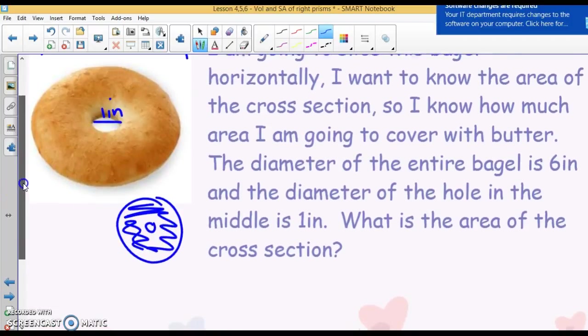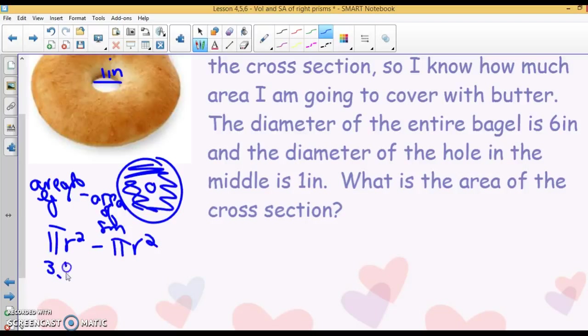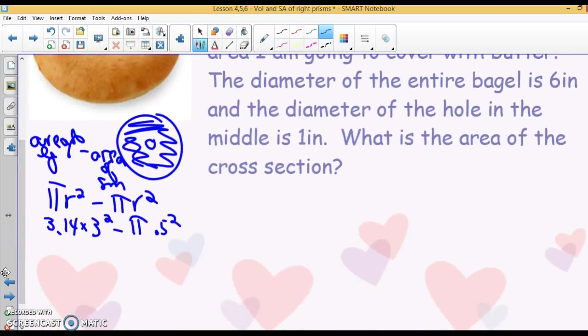To find the area where I'm buttering, I'm going to find the area of the big circle and subtract out the little hole in the middle. So area of the large circle minus area of the small circle. I'm going to use pi or 3.14. So pi r squared minus pi r squared. 3.14 times the radius of the whole bagel is 3, minus the radius of the little circle in the middle is going to be 0.5. When I do the math, here I get 28.26, but I'm using 3.14, and then I subtract. And I end up with 27.475 square inches to cover with butter.